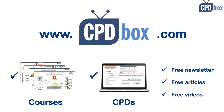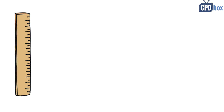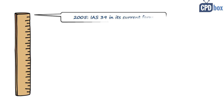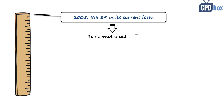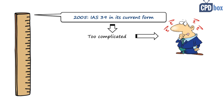Let's firstly look at how IFRS 9 developed over time. The older standard, IAS 39, came into effect in 2005, but because financial instruments are a very complex area, IAS 39 ended up being too complicated, with too many exceptions, derogations, and inconsistencies, leaving many users confused.